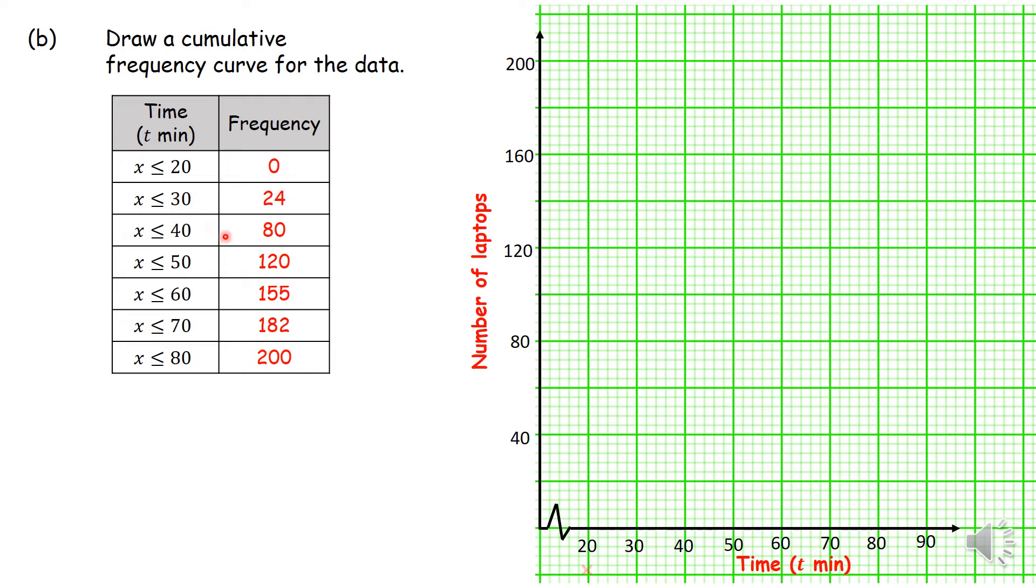And then what you also do is now you can just start plotting these ones in red. So the first is going to be zero frequency at 20 minutes. Then 24. Now it's very important that you understand how the time works here. It took him all but 24 minutes to have 24 laptops together, less than half an hour. Now it's very important that you do understand how the scales work. This scale here is 40 divided by 10, so one little block there represents 4 units.